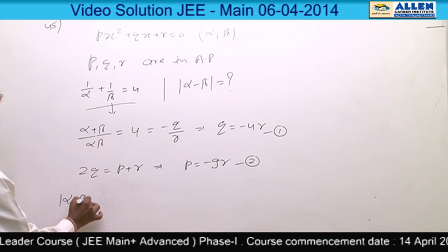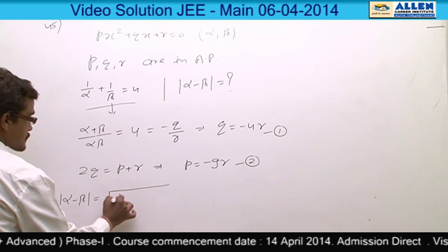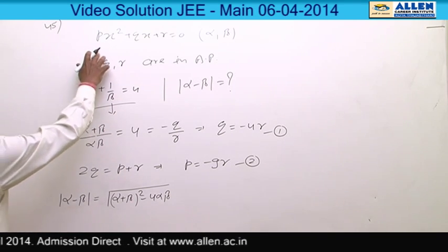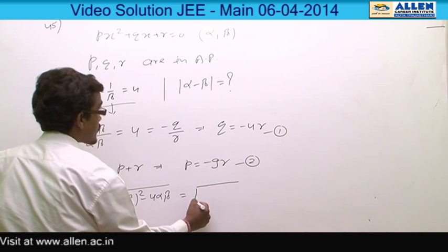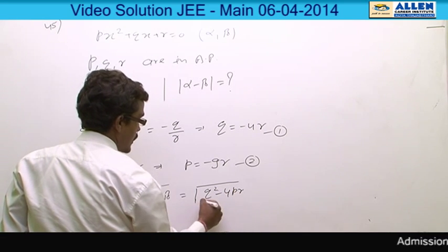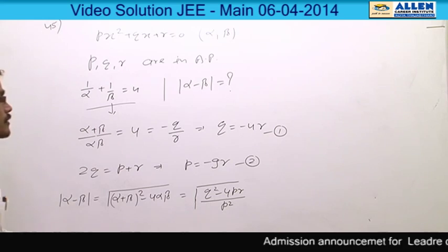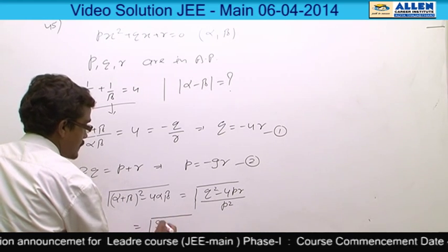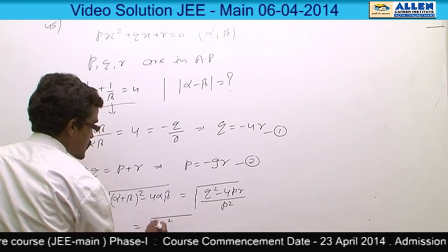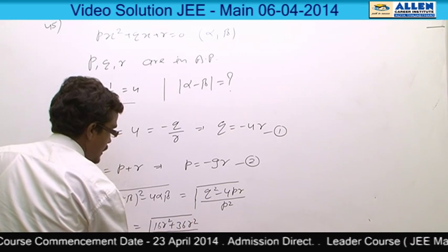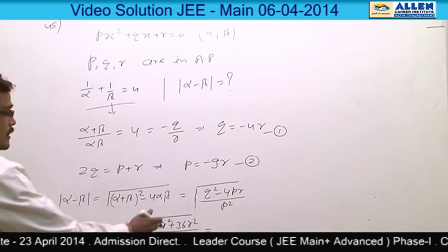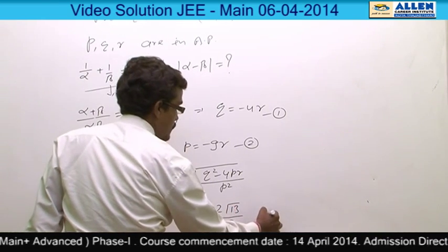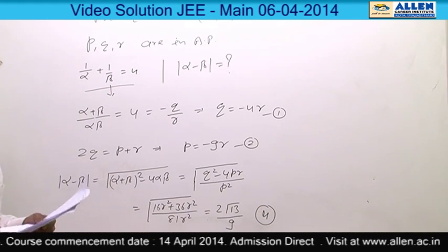Now we find |α - β| = √[(α + β)² - 4αβ] = √[(q² - 4pr)/p²]. Replacing q = -4r and p = -9r from equations 1 and 2, we get √[(16r² + 36r²)/(81r²)]. The r² cancels, giving 2√13/9, which is option 4.